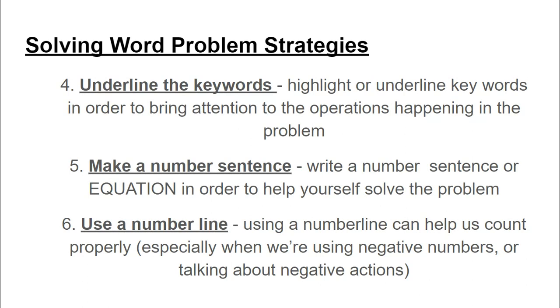The next is underlining keywords, so you're highlighting, underlining keywords in order to bring attention to the operations that are happening. You're making a number sentence or an equation in order to help you better solve the problem, and then you're also using a number line. If you're having a hard time counting with negative numbers or having an idea of where to go from starting with a negative number, using a number line can be really helpful.